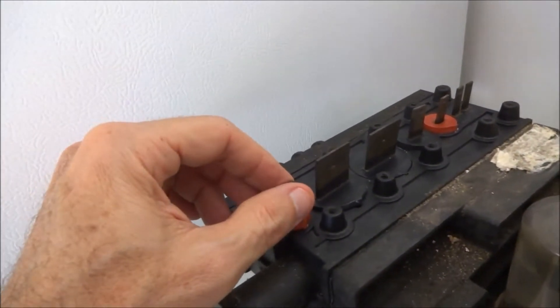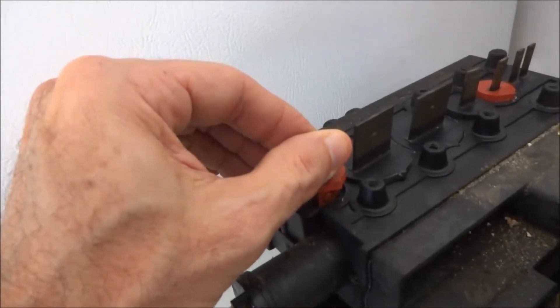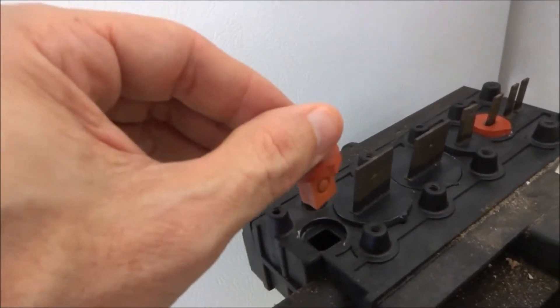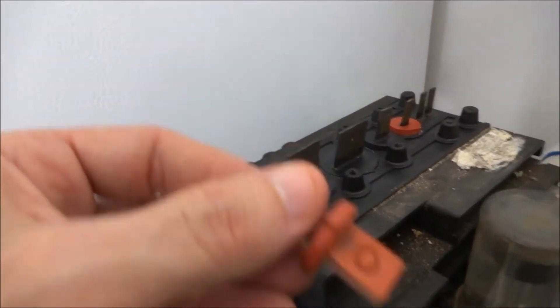To remove each valve disc, you pull up on each one. Some of them may be stubborn, but you just pick up on each one, pull it out, set it to the side.